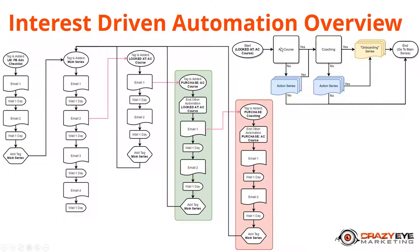Once they purchase the ActiveCampaign course, we try to sell them on our coaching plan. We end the 'looked at active campaign course' automation — since they already purchased it, there's no reason to keep selling it. Then we send an email about coaching: 'Hey, check out our coaching plan, it'll really help you get the most out of the course.' They purchase the coaching plan, and we end the 'purchase active campaign course' automation, since they've now bought the coaching program too.